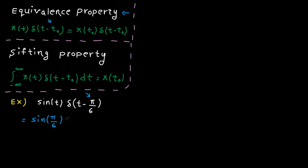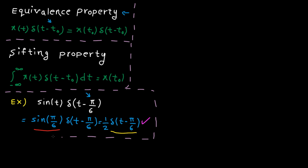So here's what we get: sine of pi over 6, multiplied by the delta function. From trigonometry, we know this term is 1/2, so we get 1/2 multiplied by the delta function. I want to emphasize again that the delta function must be present in the final answer — otherwise the function would be 1/2 everywhere, which is not true.